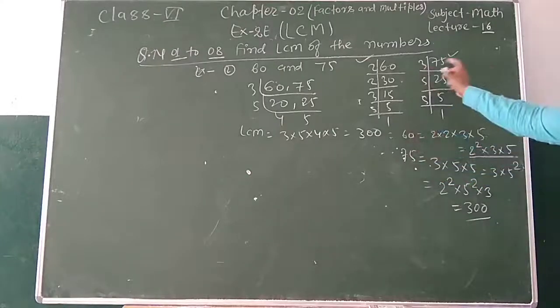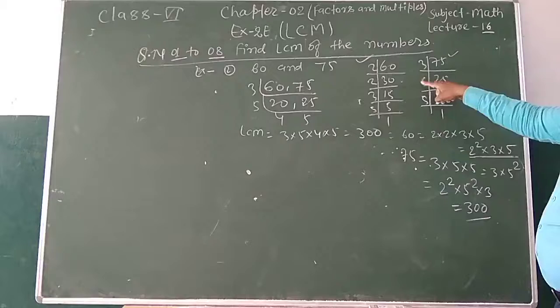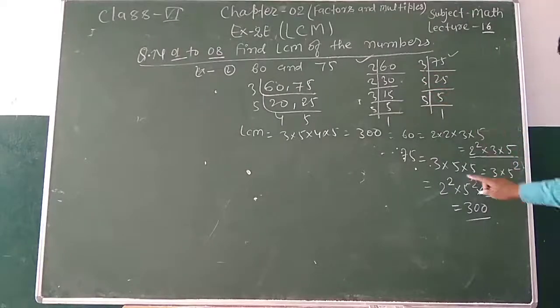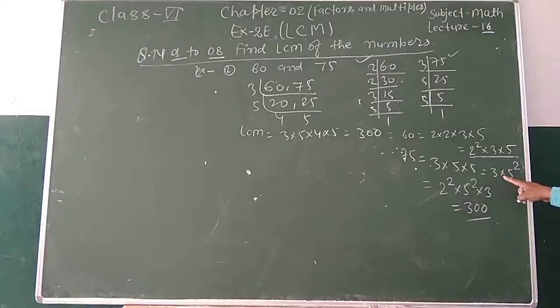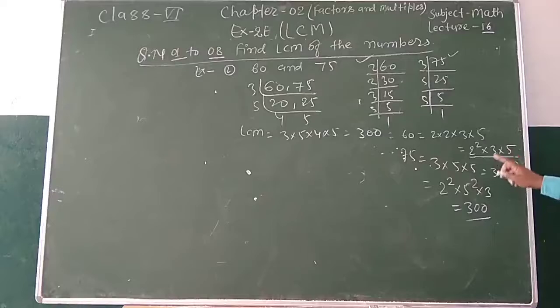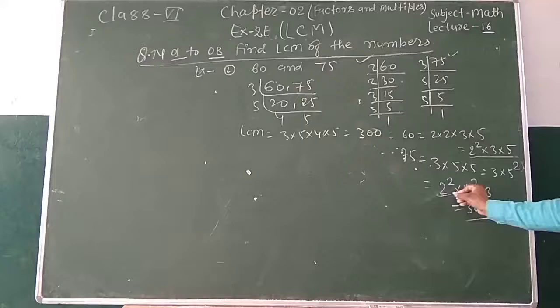So, if you want to take the same method, it will be equal to 3 into 5 into 5. It will be equal to 3 into 5 into 5, and if you add power to 3 into 5 into the power 2, then it will become 2 to the power 2.